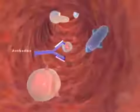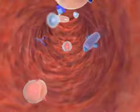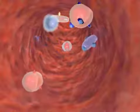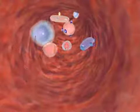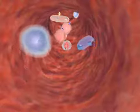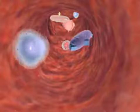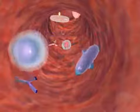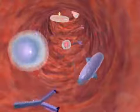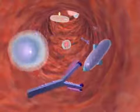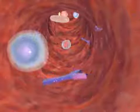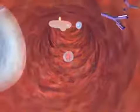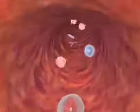B cells respond by transforming into antibody-secreting cells. Their antibody binds to the antigen causing its destruction. Some B cells remain in circulation carrying the memory of that antigen.